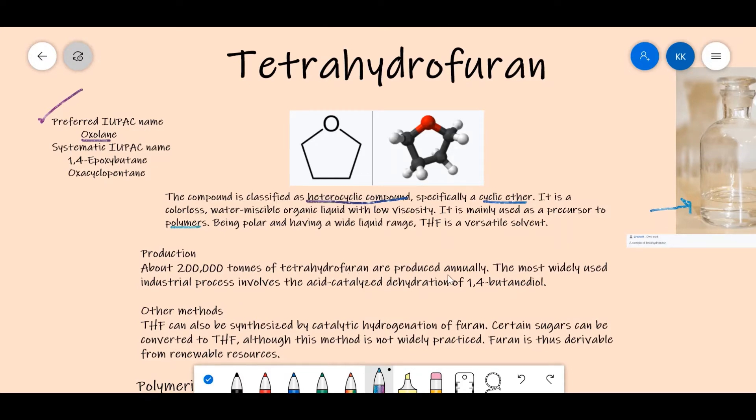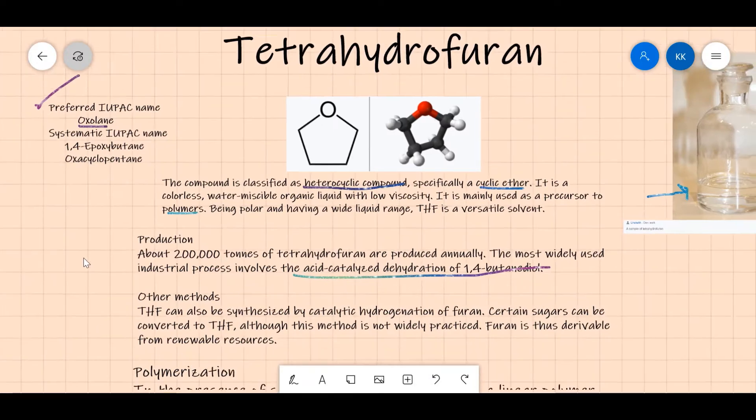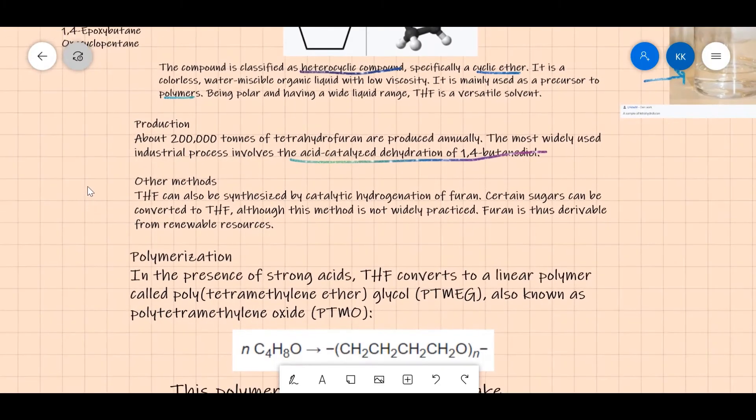The most widely used industrial process involves the acid-catalyzed dehydration of 1,4-butanediol. You can look up the reactions in case you want. I'm not going to delve into the industrial processes right here.